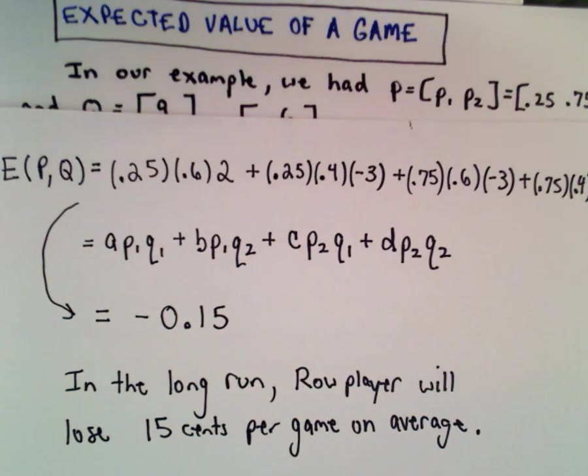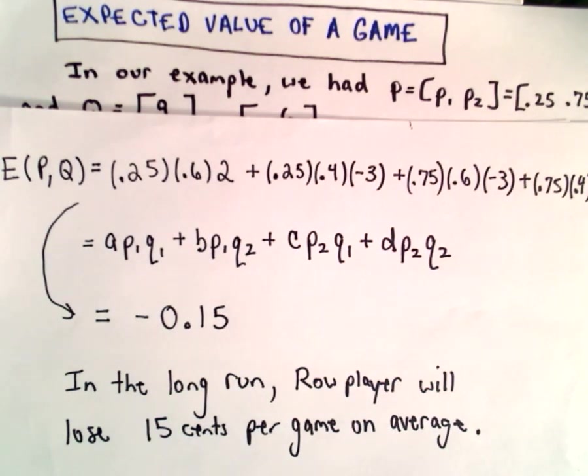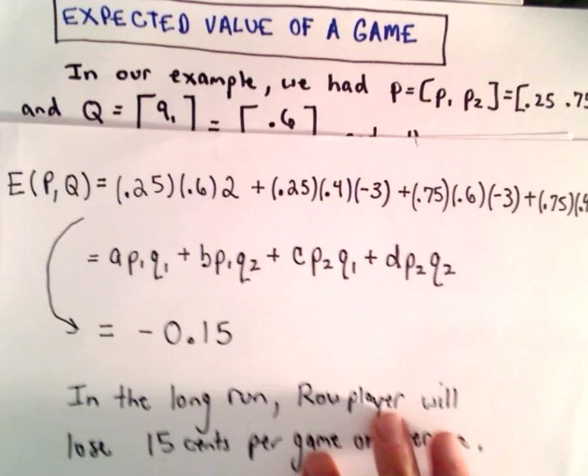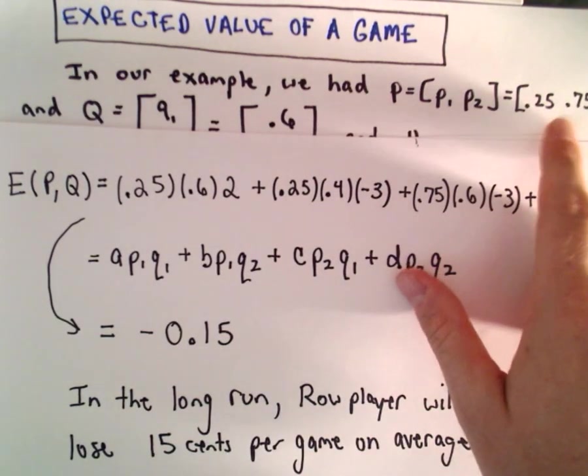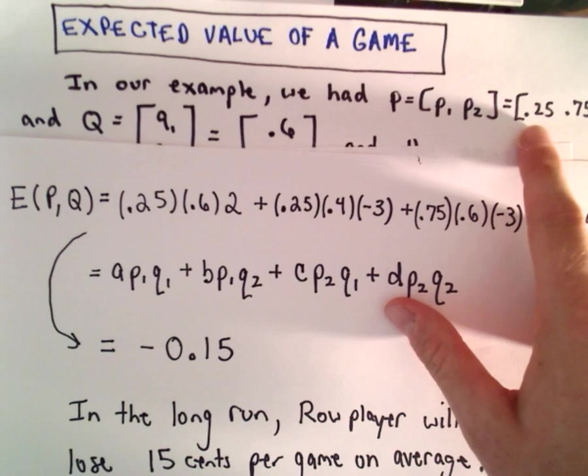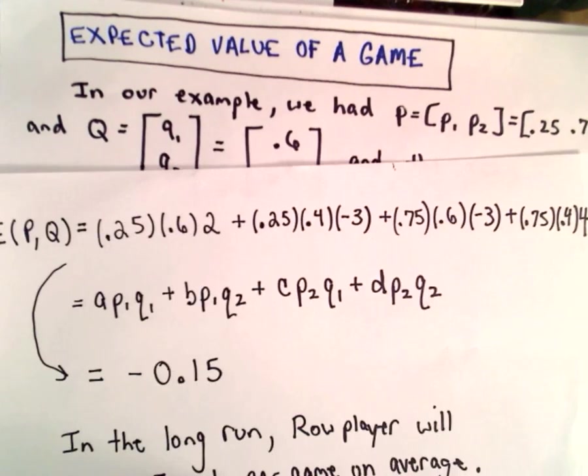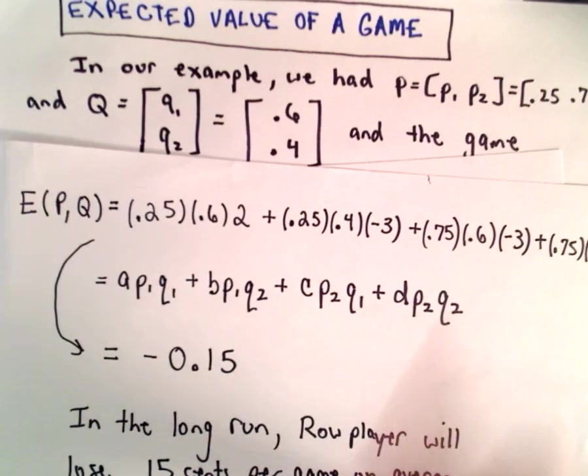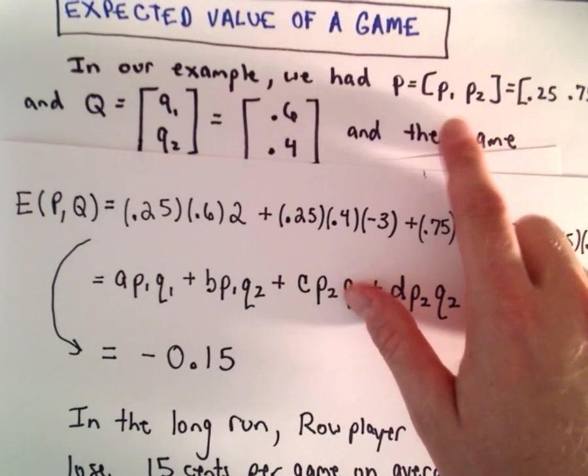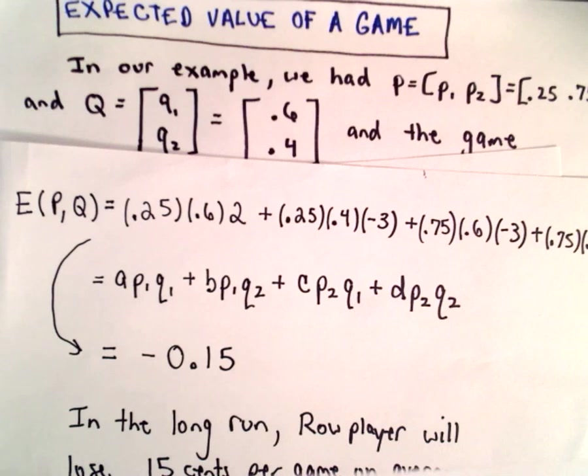So I guess the big question is here, obviously you can choose different probabilities, right? You don't have to use 0.25 and 0.75, and you don't have to use 0.6 and 0.4. So the big question is, is there an optimal way to change these probabilities?